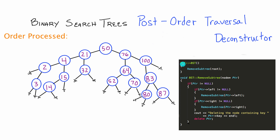The destructor gets called automatically whenever one of our binary search trees goes out of scope. When that happens, it calls the remove subtree function starting at the root. The node pointer passed into remove subtree is going to point at the root node when the destructor is first called. Currently the node pointer PTR is pointing to the root node, so it enters the remove subtree function, we're pointing to a node, and we enter the if condition which checks whether our pointer currently has a left node — and it does.